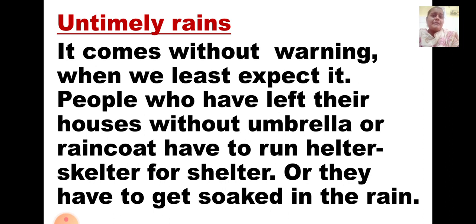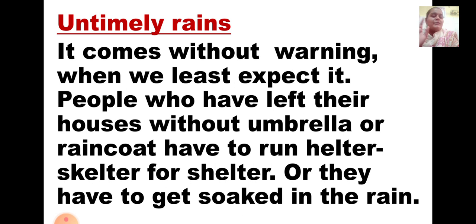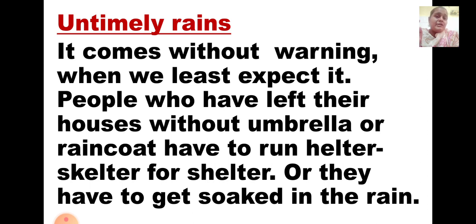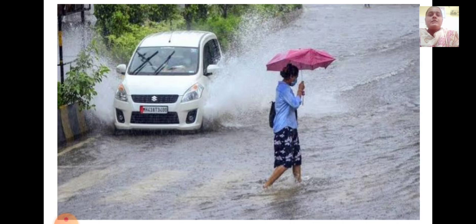The first natural disaster is untimely rains. From the word itself, we understand that when it is not the rainy season, it is known as untimely rains. It comes without warning or expectations, when we least expect it. People who have left their houses without an umbrella or raincoat have to run helter-skelter for shelter — for example, in the month of May, we do not carry a raincoat or umbrella, and unexpectedly it rains. We will run here and there looking for shelter, or we have to get soaked in the rain. This is untimely rains.